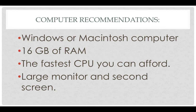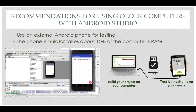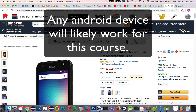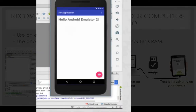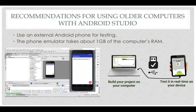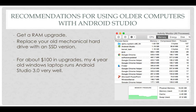Android Studio is kind of a memory hog, so you might want to think about upgrading. You'll need either a Windows or a Macintosh computer, and I recommend 16 gigabytes of RAM. Get the fastest CPU you can afford, and get a large monitor — laying out all the different pieces of your Android app will require lots of real estate. If you don't have a new computer, you can save memory by getting a phone or tablet that runs Android. You can attach your phone with a USB cable and run test apps there, rather than using an emulator, which gobbles up about a gigabyte of RAM.